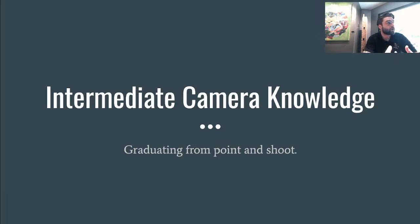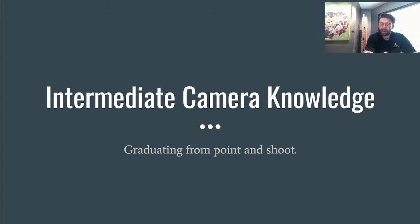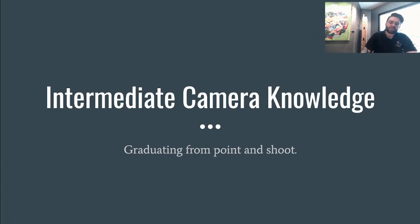Now we're going to start getting into the more advanced or intermediate knowledge. We're going to talk about the exposure triangle in depth — that's the shutter speed, your ISO, and your f-stop. We'll also be talking about the trinity of lenses: the most recommended lenses depending on whether you're traveling or a professional photographer. Then we'll talk a little bit more about editing software today as well.